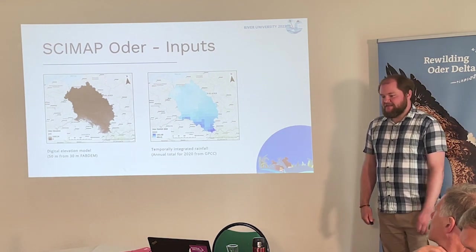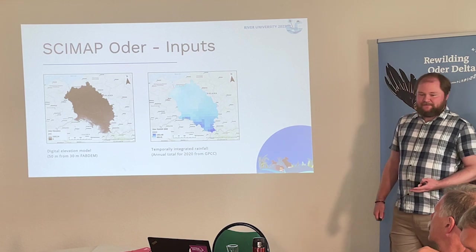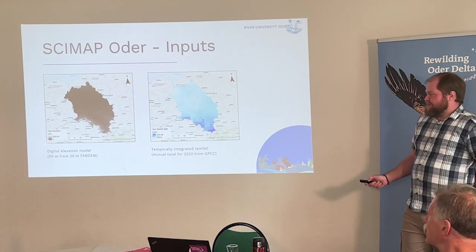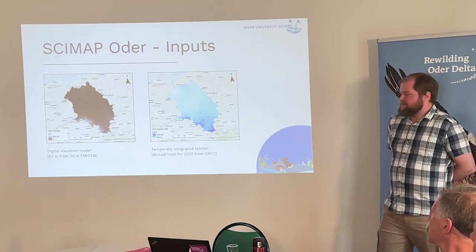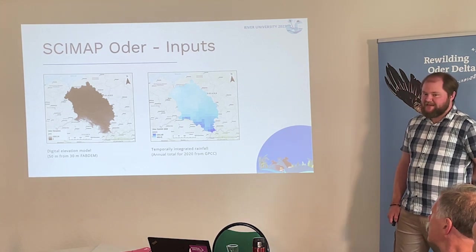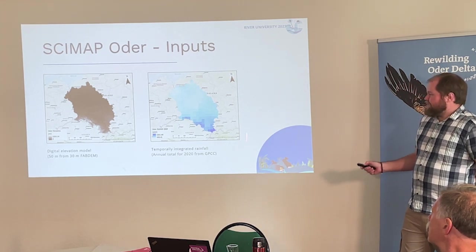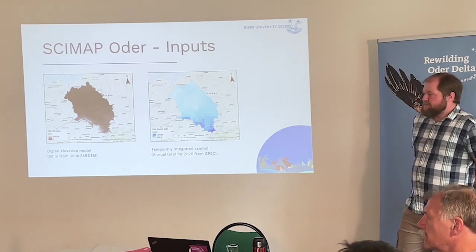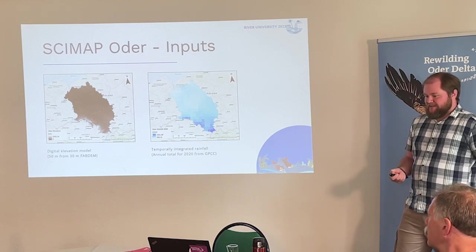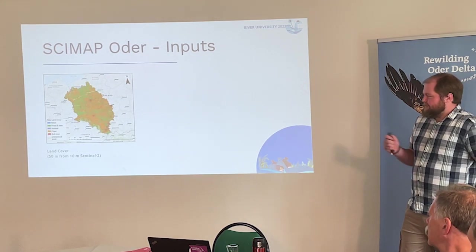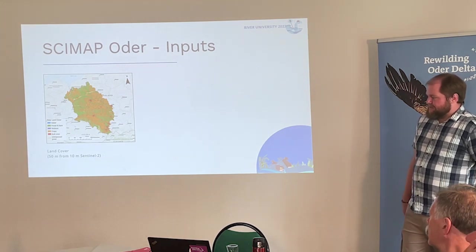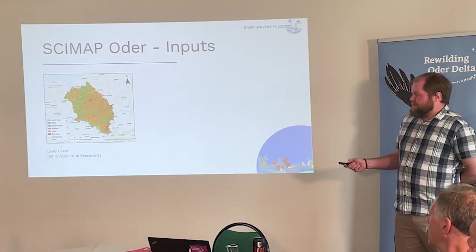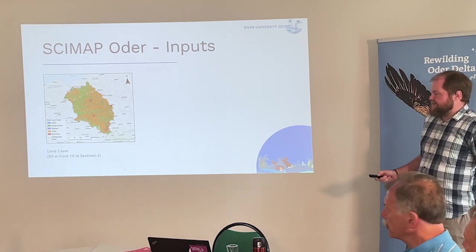To apply SCIMAP to the Oder basin, we need three inputs. Two of them are: a digital elevation model — from the FAB DEM, which is a 30-metre global resolution model resampled to 50 metres here — and general precipitation patterns, in this case the annual rainfall total for 2020 as an example. The third input is land cover, derived from 10-metre data resampled to 50 metres. We have key land cover classes: water, forest, bare ground, wetlands, crops, built areas, and improved grassland.